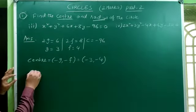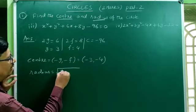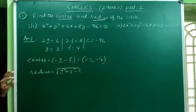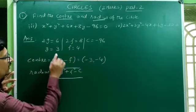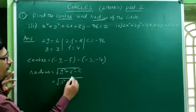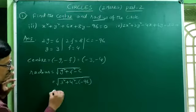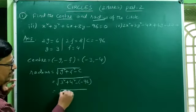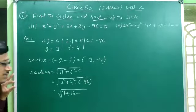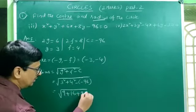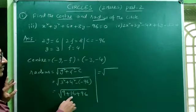Now we find the radius using the formula r = √(g² + f² − c). Substituting: r = √(3² + 4² − (−96)) = √(9 + 16 + 96). So 9 + 16 = 25.